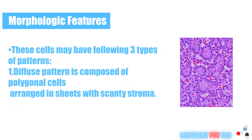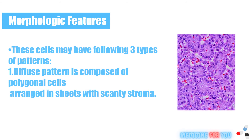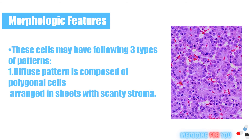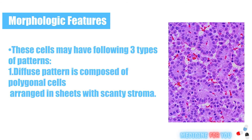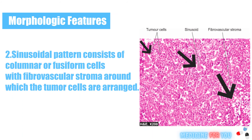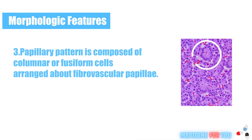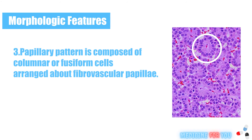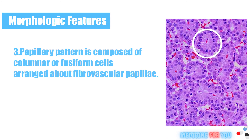These cells may have the following three types of patterns. 1. Diffuse pattern, composed of polygonal cells arranged in sheets with scant stroma. 2. Sinusoidal pattern, consisting of columnar or fusiform cells with fibrovascular stroma around which the tumor cells are arranged. 3. Papillary pattern, composed of columnar or fusiform cells arranged about fibrovascular papillae.